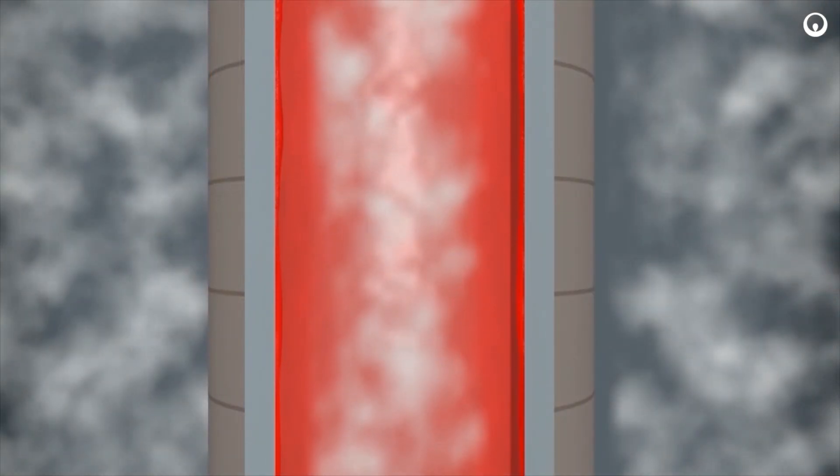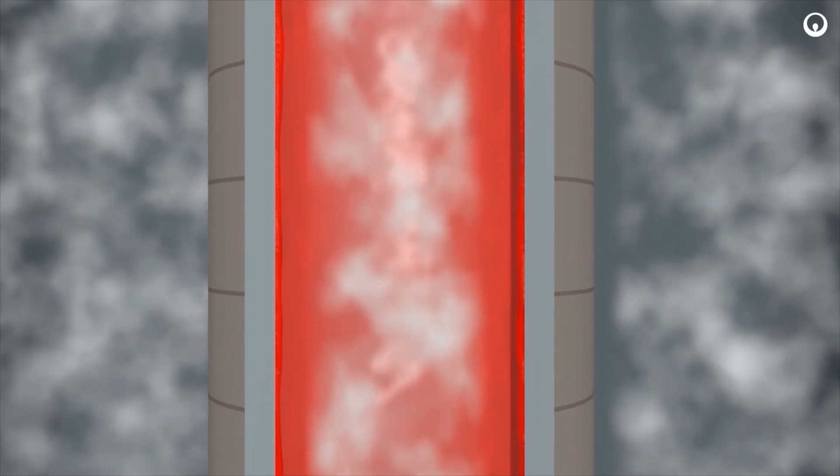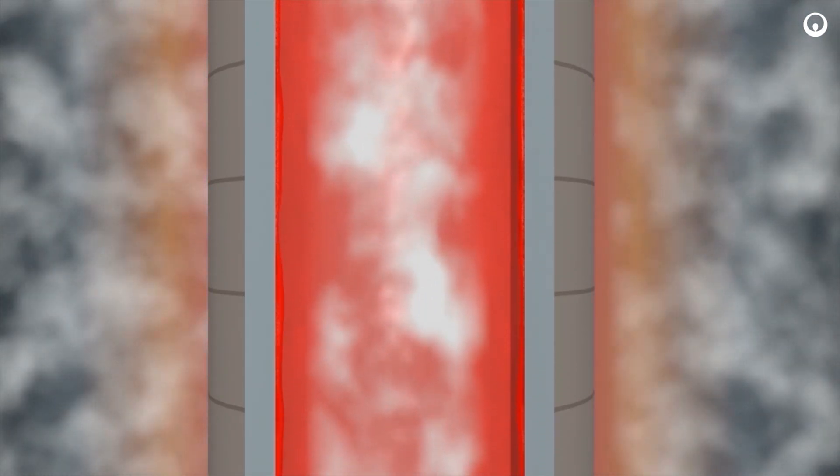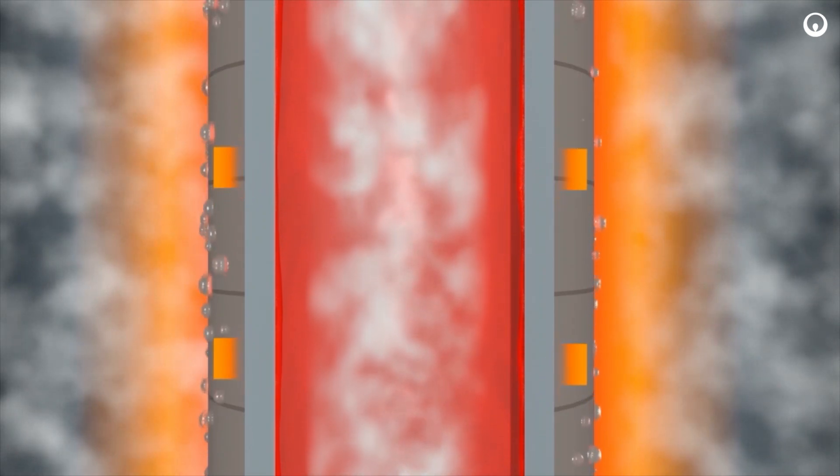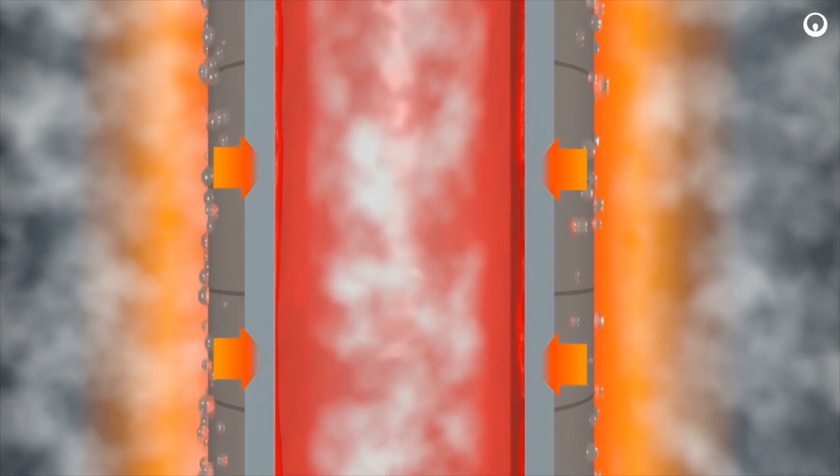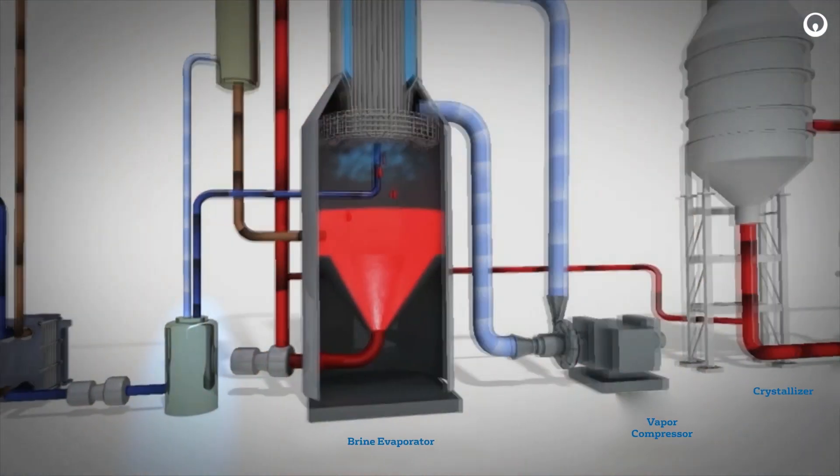The compressed vapor flows to the shell side of the heat transfer tubes of the brine evaporator. The vapor condenses on the outside of the vertical tubes. The condensed vapor flows down the outside of the heat transfer tubes and is recovered as a distillate.